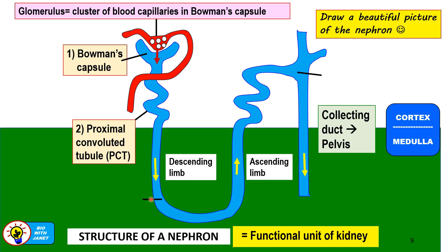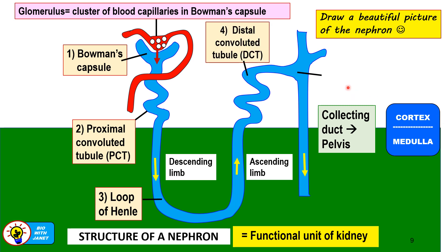The third part is called the loop of Henle — a long U-shaped tube that extends downwards into the renal medulla of the kidney. The loop of Henle has a descending limb in which the fluid flows downwards and an ascending limb in which the fluid flows upwards. The fourth part is the distal convoluted tubule — distal means it is far away from the Bowman's capsule, like the word 'distant.' Its short form is DCT. These are the four parts of the nephron.